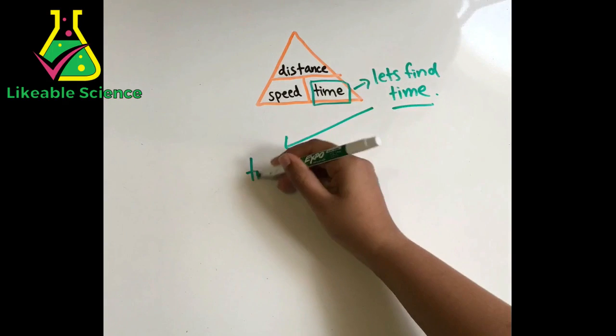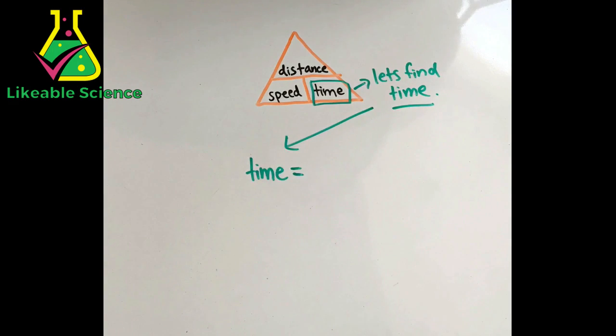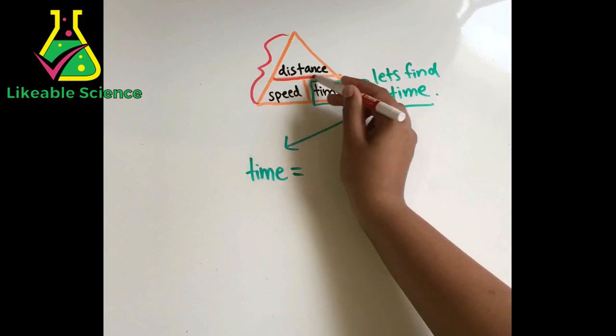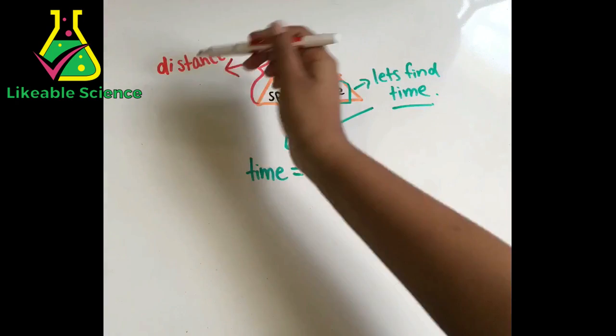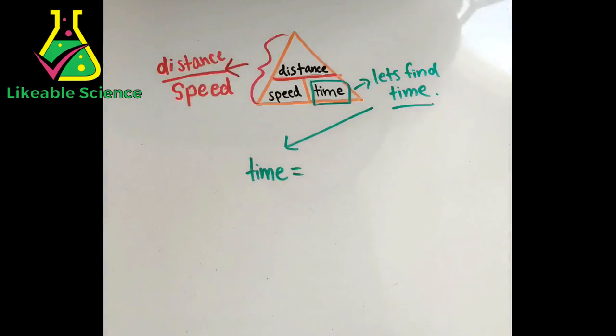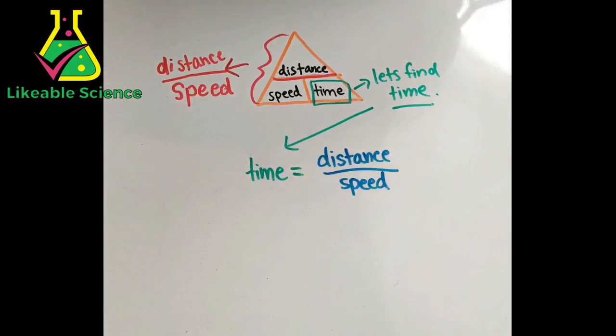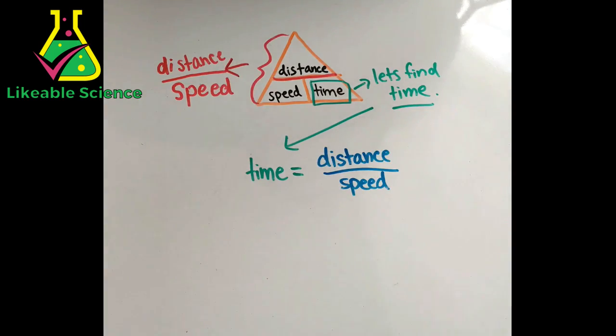You can also create another equation with the triangle. What if we want to find time? Let's write time equals, so we can get rid of that in the triangle. The only two things left in the triangle are distance and speed. Distance is on top of speed with a dividing line between them, so the other half of our equation would be distance over speed.